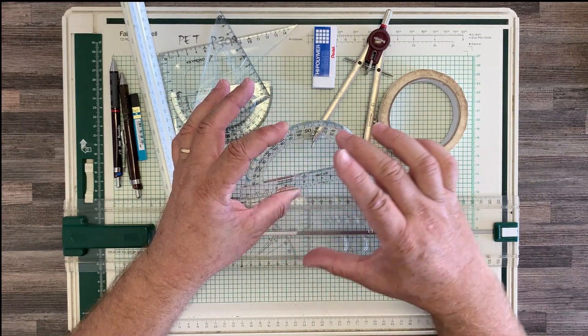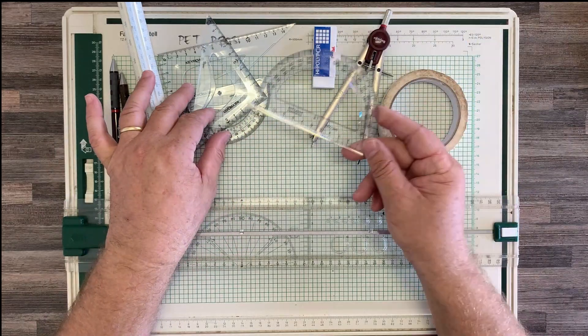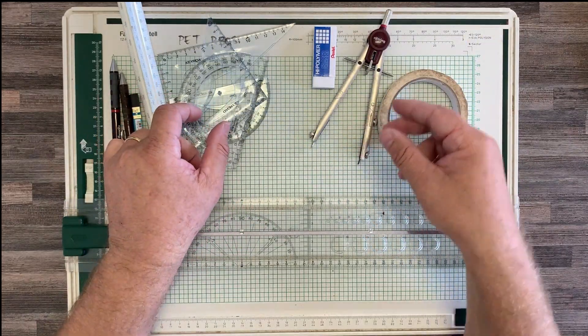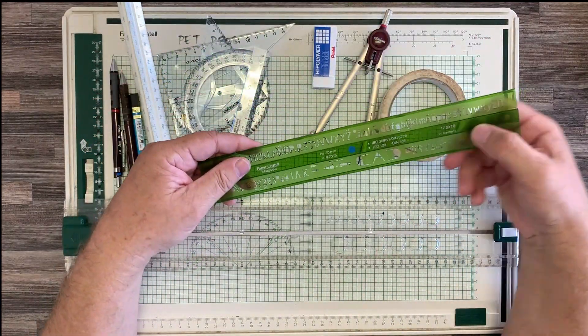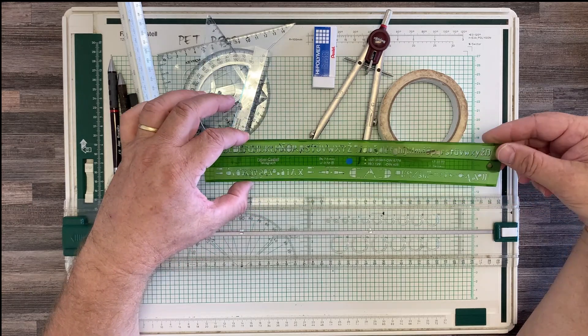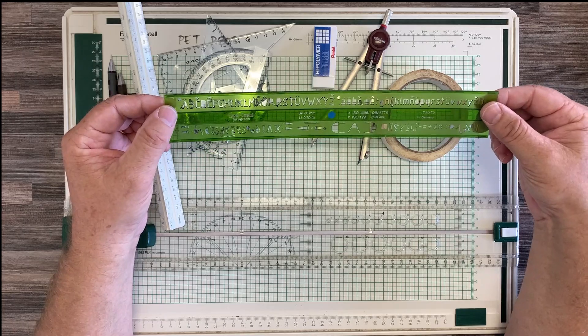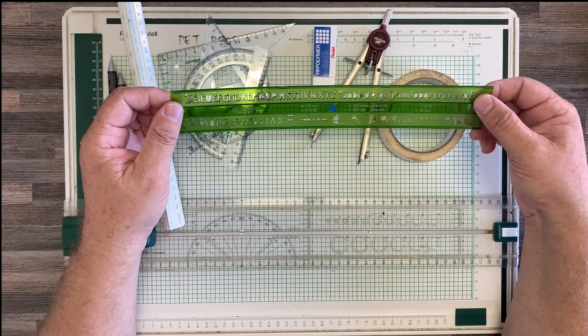That allows you to draw curves that are either increasing or decreasing in the radius to create interesting shapes, but we don't really use that in engineering. Here I have a stencil for writing letters, but we don't need this at this stage either because I'm going to be teaching you to write neatly by hand.